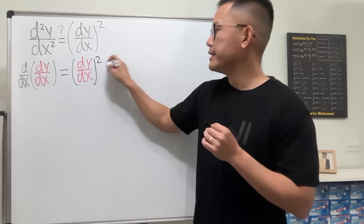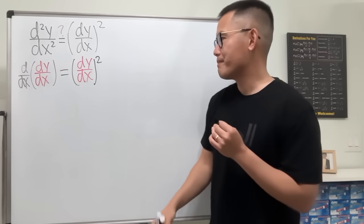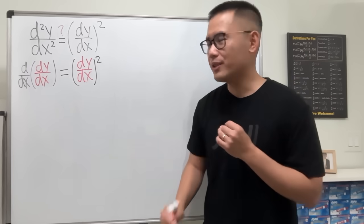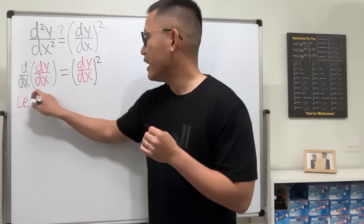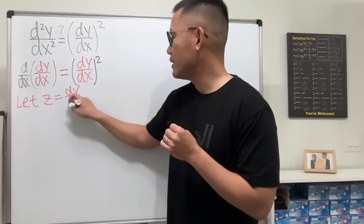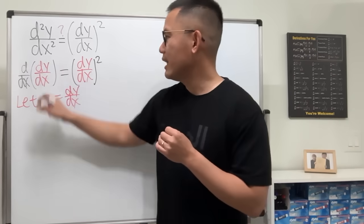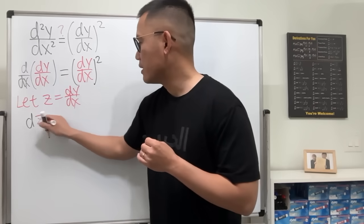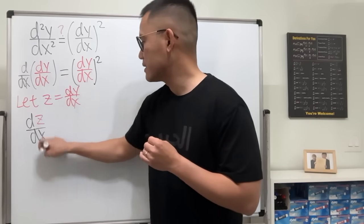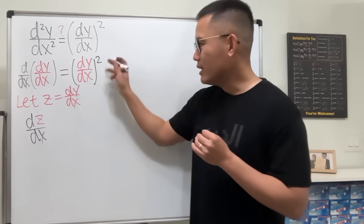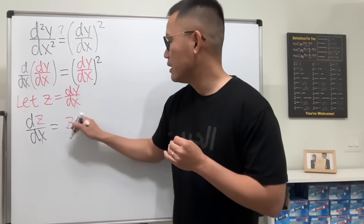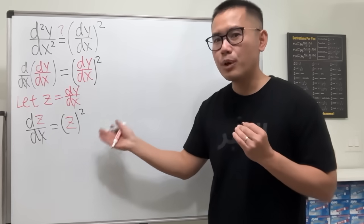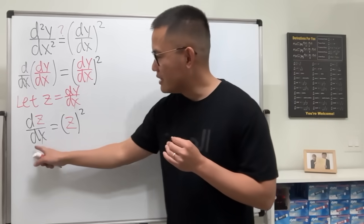Notice the dy/dx appears on both sides, so we can use a substitution. Let z = dy/dx. Then the left hand side becomes dz/dx, and the right hand side becomes z². Now we have a separable differential equation.